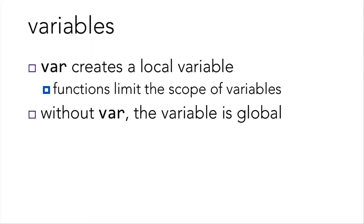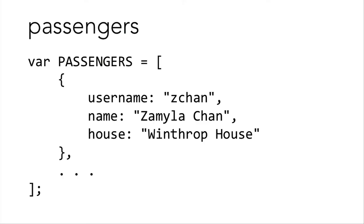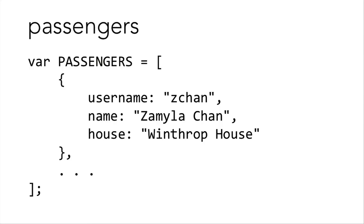Now in JavaScript, functions will limit the scope of variables. So if you have a local variable within a function, then other functions can't access it. But unlike C, loops and conditions don't limit the scope of the variable — so even if you declare it inside a condition, the whole function will have access to it. Without var, the variable will be global. In houses.js, we have an associative array of house-type objects, where every house is just a latitude and a longitude. Then we have the passengers array, which is an array of object-type passenger. So every passenger has a username, a name, and a house.